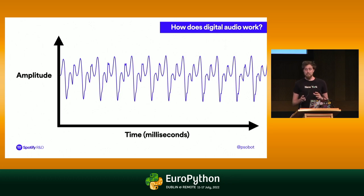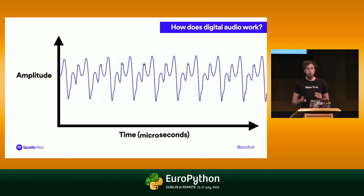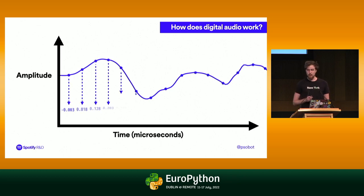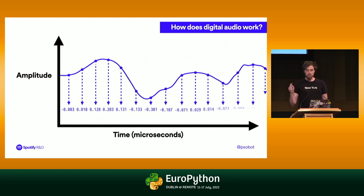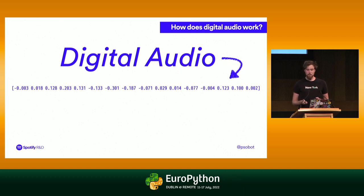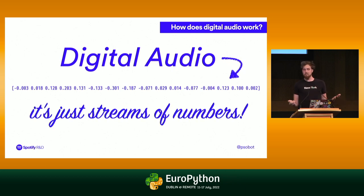Let's keep going even deeper — from milliseconds down to microseconds, where we'll be able to see the actual samples. Now that we're super zoomed in, the actual samples look like little points along this graph. We can measure every single point at the microseconds level, and this gives us a representation of the audio. Here's the real secret: this is digital audio. This is all it is. Digital audio is really just streams of numbers — nothing too complicated, although you can do complicated things with it.